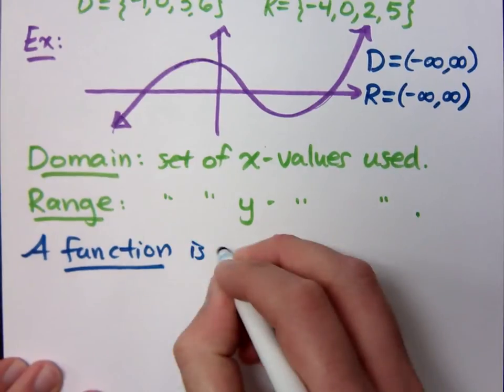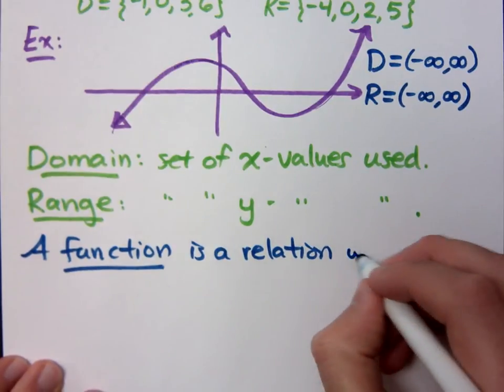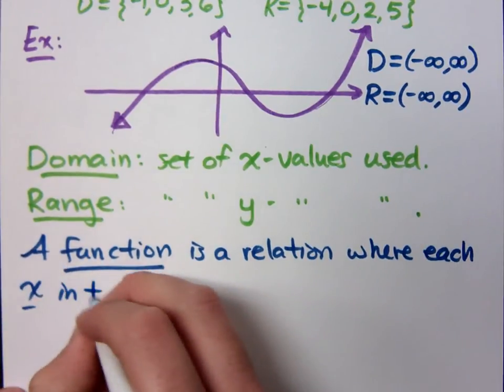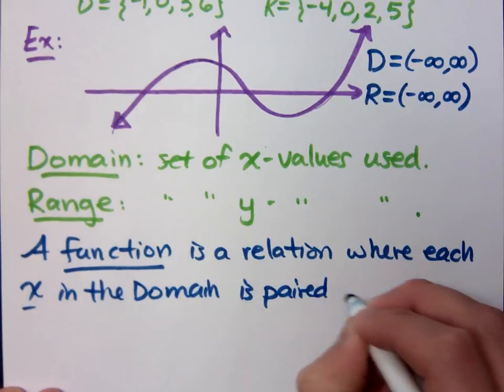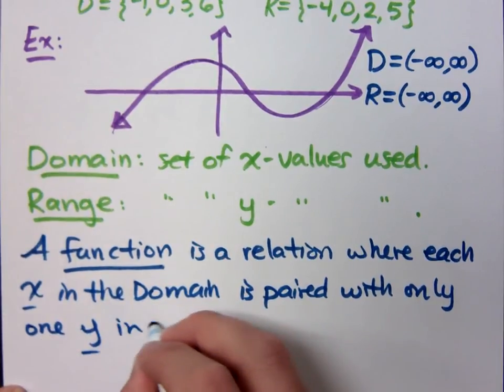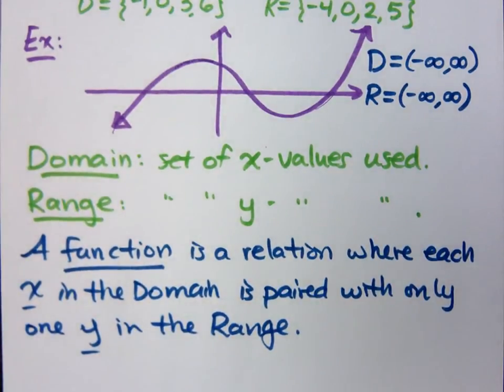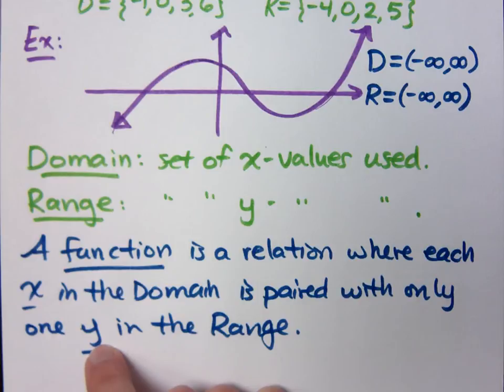Here is the definition for a function. A function is a special relation. A function is a relation where each x in the domain is paired with only one y value in the range. So a function is a relation. That means it's still a collection or a set of ordered pairs. But it's special in the fact that each x is paired with only one y.